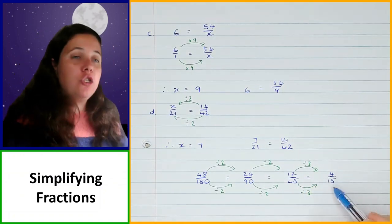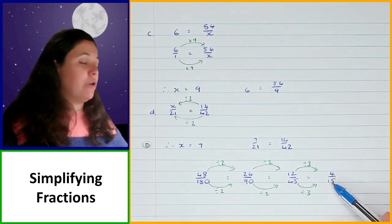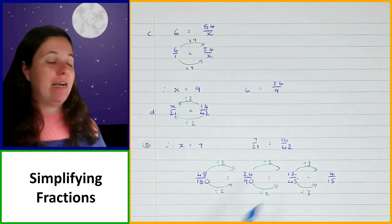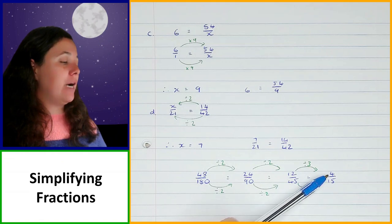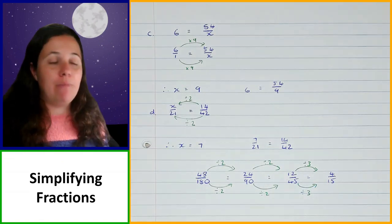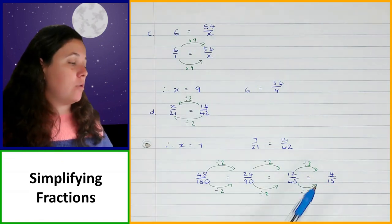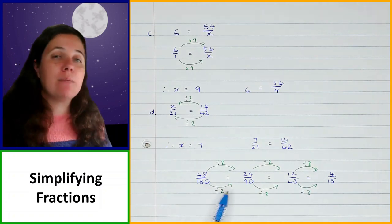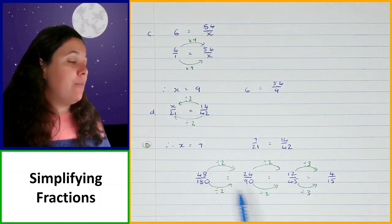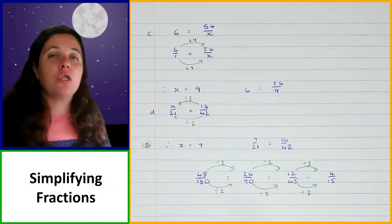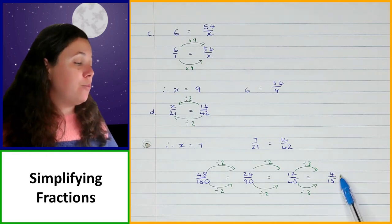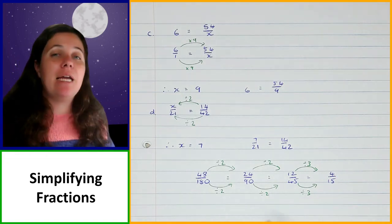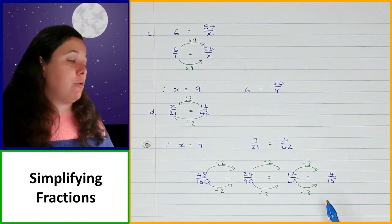Now if I look at 4 and 15 in my numerator and denominator, they do not have a common factor — I can't divide 4 and 15 by the same number. So this is as far as I can go. When simplifying fractions you need to keep going until you can't anymore. I have simplified as far as possible.